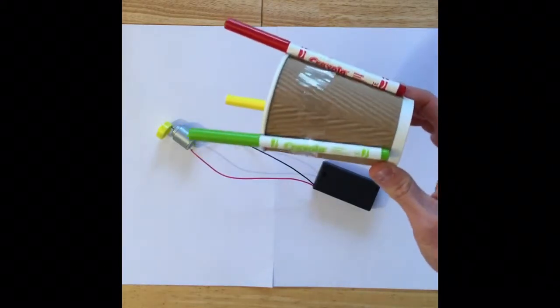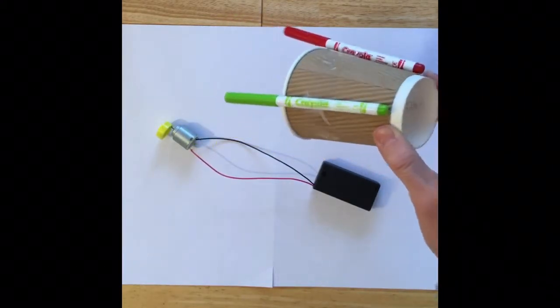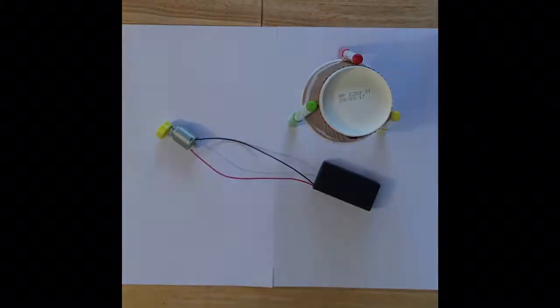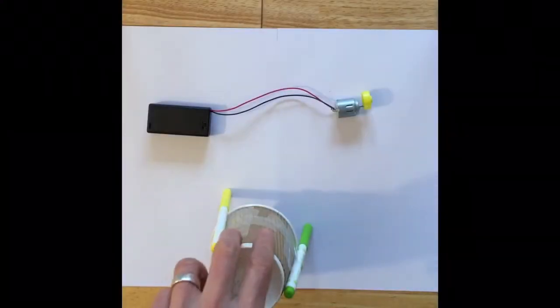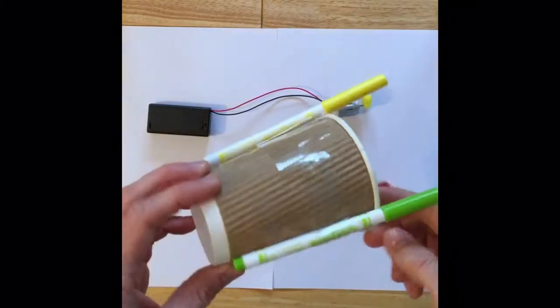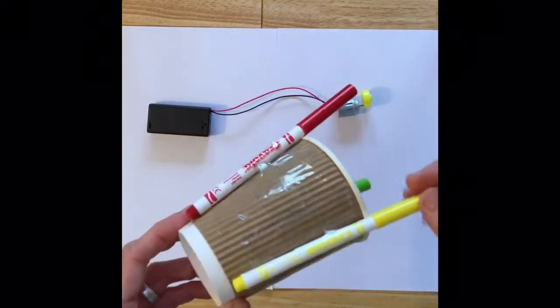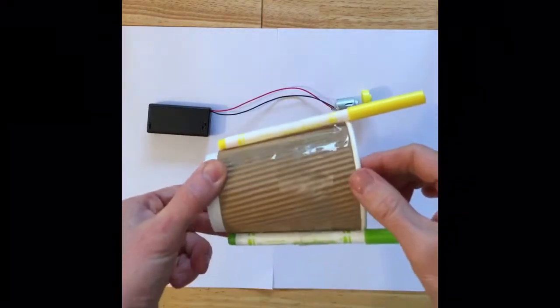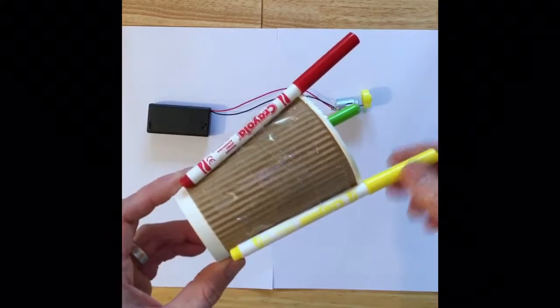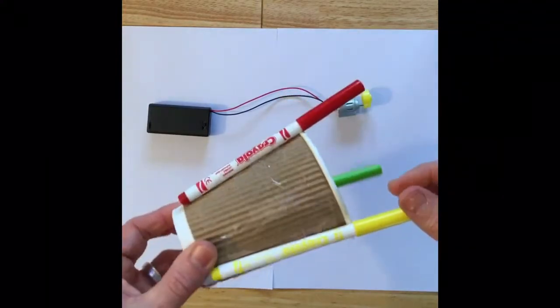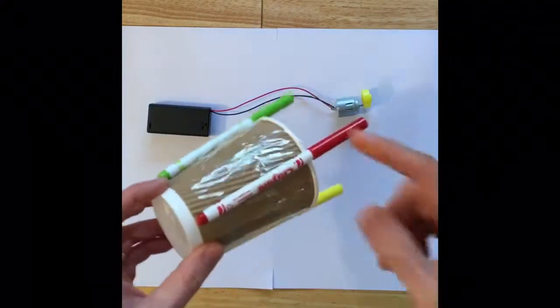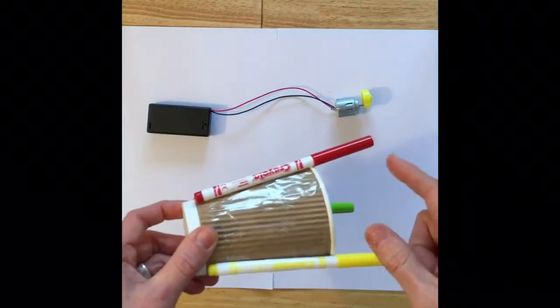I'm just going to quickly secure this a bit better and then we'll look at adding the components. Okay, I used a bit more sellotape now, you can see, to make sure my legs are nice and secure so they're not going to fall off. That's one of the things that the children are going to have to make sure they're doing is they're attaching their legs nice and secure.